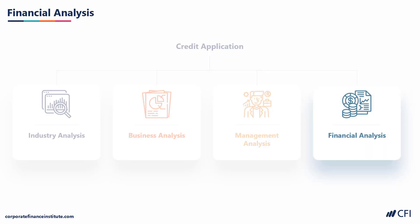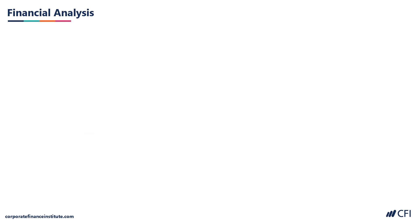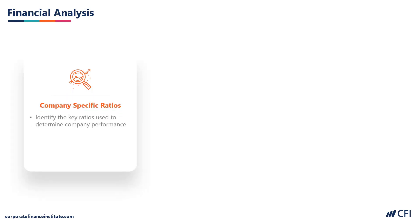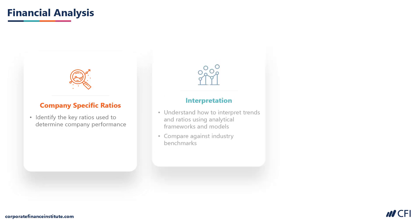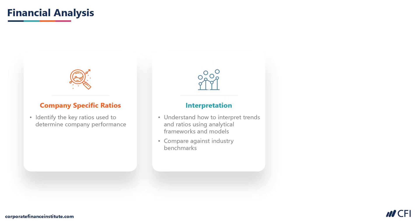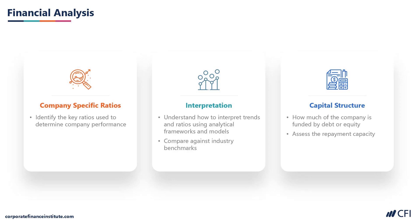In this section, we'll be looking at how financial analysis supports a credit application. Let's take a closer look at the types of financial analysis that will need to be performed. One is company-specific ratios — ratios and analysis that are unique to a particular industry or type of company, which can be compared to benchmarks or other companies in the same category. We'll look at how to interpret those ratios relative to other companies, and assess how well the business is performing. We'll also look at capital structure — how much debt a company has relative to its equity or other capital, so we can assess how much room it has to take on additional debt.